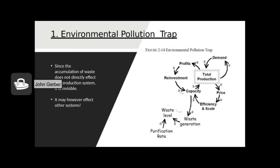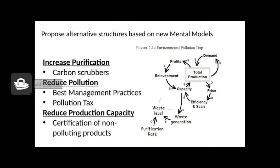Let's start with the environmental pollution trap, an increase in waste production because of increased capacity and nobody's paying attention. Here are some of the solutions proposed by my class. Increased purification, we know the purification rate increases, we can drop the waste level. Carbon scrubbers, for example, on the top of smokestacks that pull carbon dioxide out of the smoke before it goes in the atmosphere.